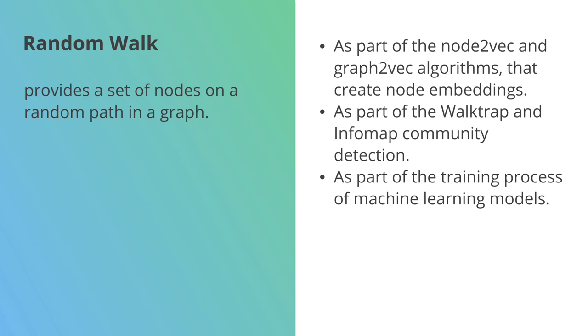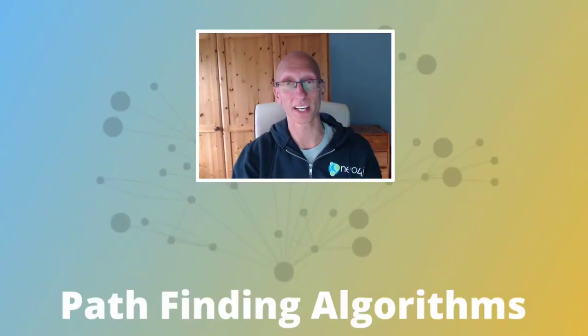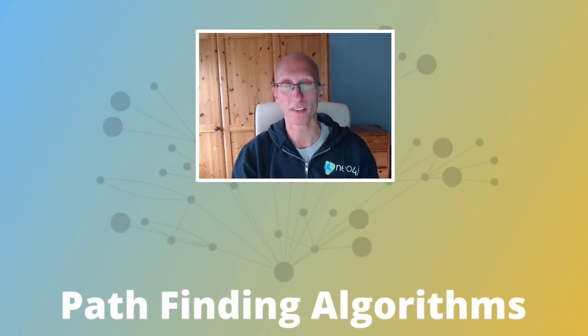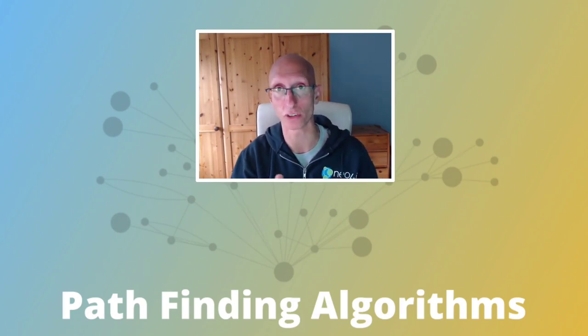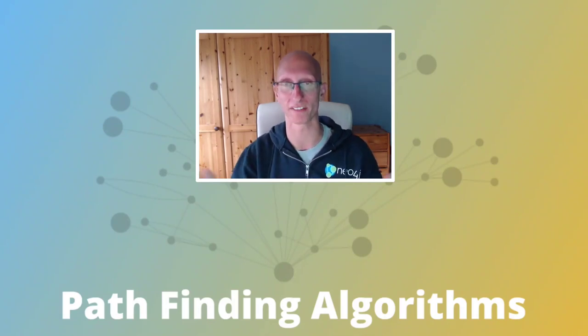Okay, so hopefully now you've got a good understanding of path finding algorithms. Just to recap, these are algorithms where we could be finding the shortest path between a pair of nodes, we could be trying to find the shortest path between all pairs of nodes, or perhaps we're just starting from one specific node and we want to know the shortest path from that one to everybody else. And then equally with the random walk algorithm, we could just be trying to find some sort of random path through our graph.